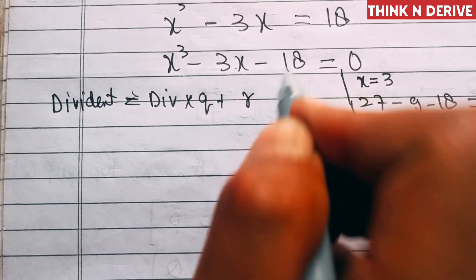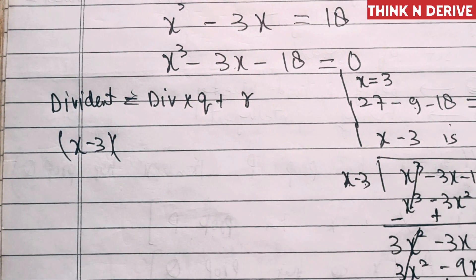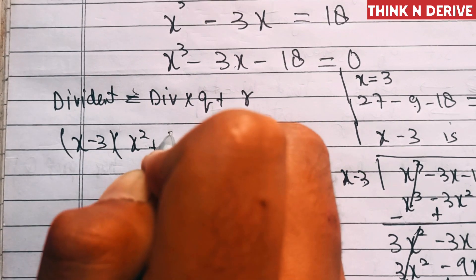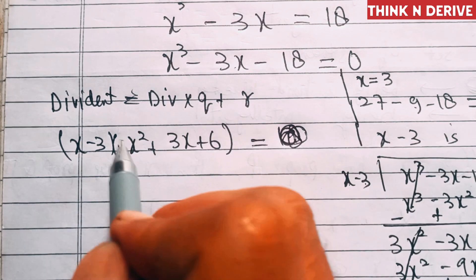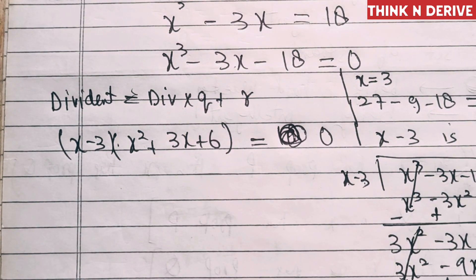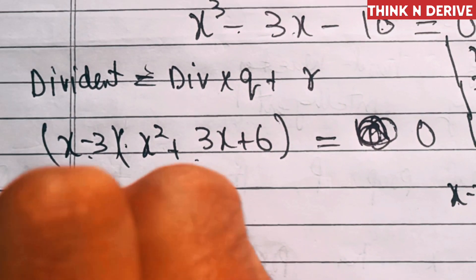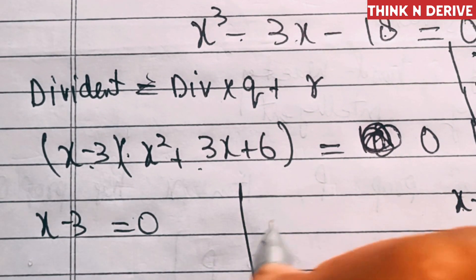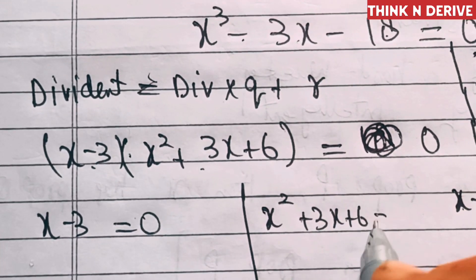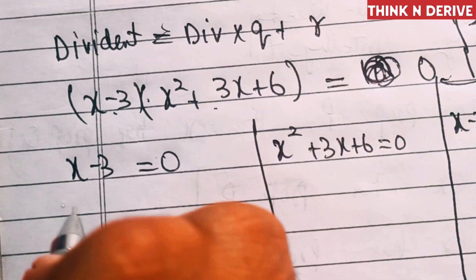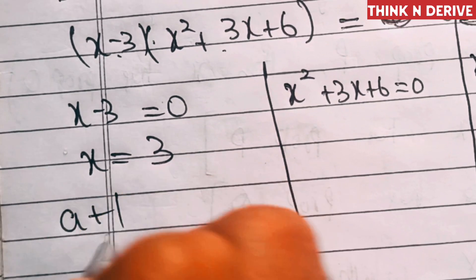So we can write x³ - 3x - 18 = (x - 3)(x² + 3x + 6). Since this equals 0, either x - 3 = 0 or x² + 3x + 6 = 0. From the first factor, x = 3, meaning a + 1/a = 3.